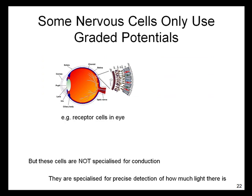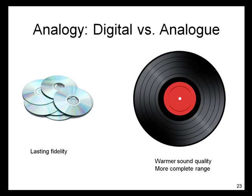Despite this disadvantage, some nervous cells only use the graded potential. A classic example is the set of receptor cells in the eye — the rods and cones — because these cells are not specialized for conduction; they're specialized for precise detection of how much light there is. It might be clearer to use an analogy of digital versus analog recording. Digital recording has lasting fidelity, just like action potentials. But analog recording, like graded potentials, has more precise signals — which is why vinyl records have a warmer sound quality, one reason some DJs prefer old-school phonographs.